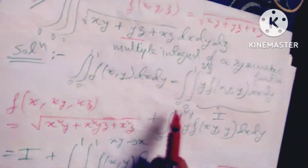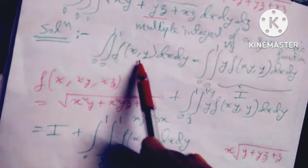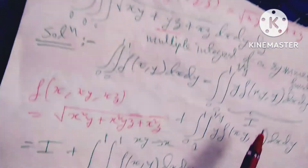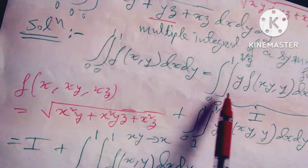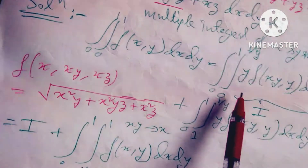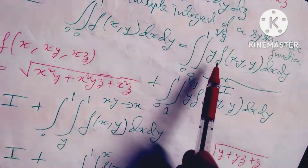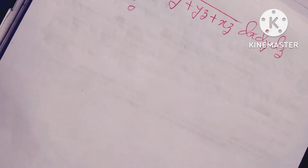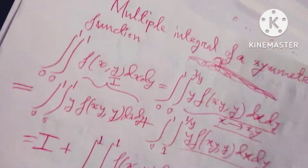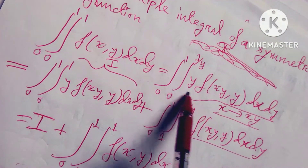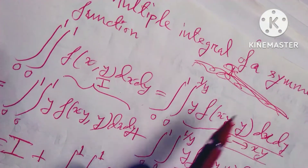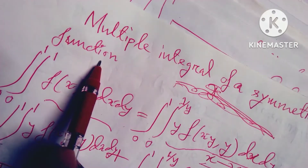We write the double integral of f(x, y) dx dy from 0 to 1 and 0 to 1 by y. Then f(x, y) dx dy equals — let x tend to xy, then it is y and f(x, y), and the limit is changing from 0 to 1 by y. This is a multiple integral of symmetric functions.